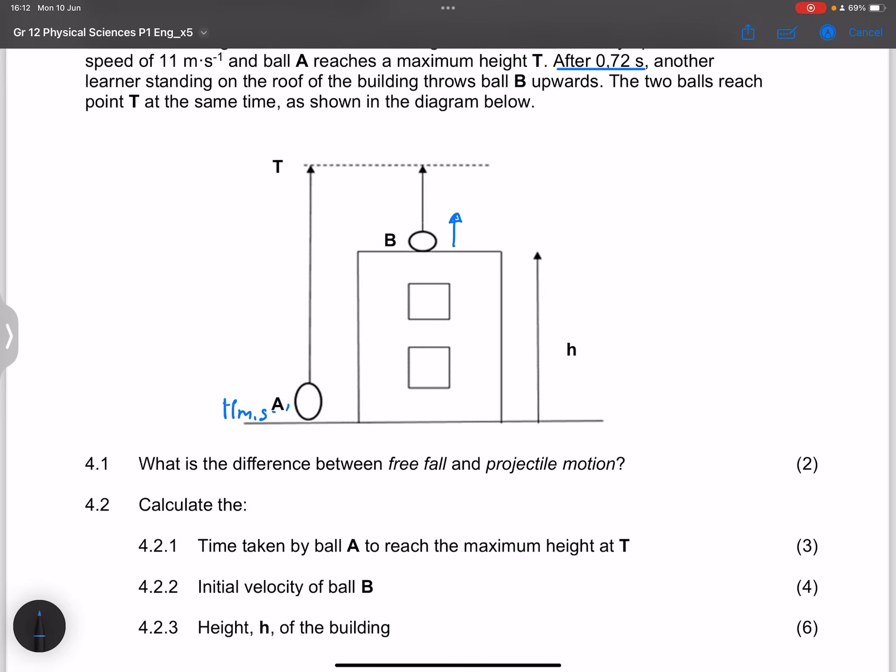The first question: calculate the time taken by ball A to reach the maximum height at T. From the ground to get to T, we know that the velocity at T should be equal to 0. The initial velocity was 11 meters per second. And we know that it moves under gravitational acceleration. For 4.2.1, we're going to use an equation of motion. In this case, we are looking for time. We've got initial, final velocity, and acceleration. So we can use the first equation: Vf is Vi plus A or G delta T.